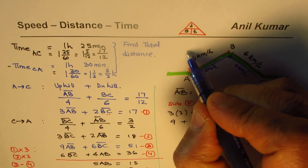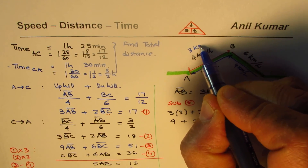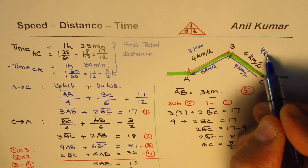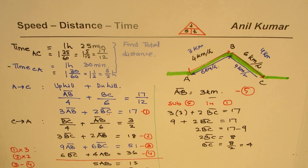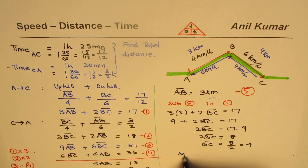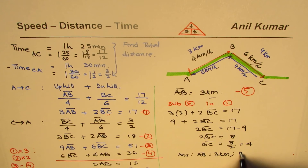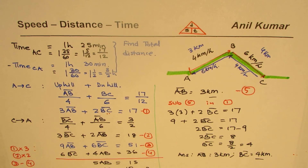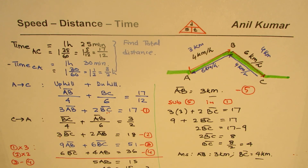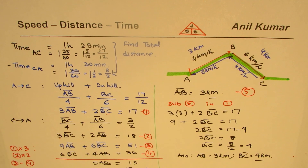So the answers are: AB is 3 kilometers and BC is 4 kilometers. From A to B it is 3 kilometers and from B to C it is 4 kilometers. That is how you can solve such questions. I'm Anil Kumar and I hope that helps. If you like the video, please subscribe and share with your friends. Thank you and all the best.